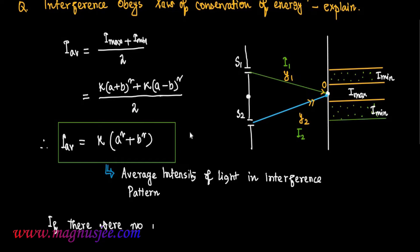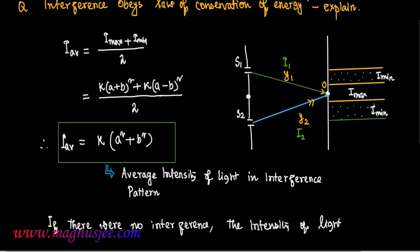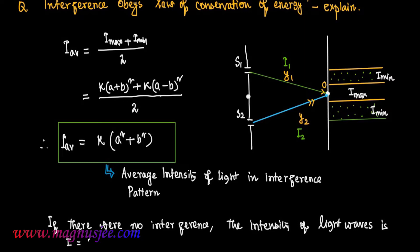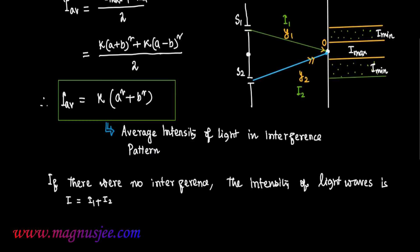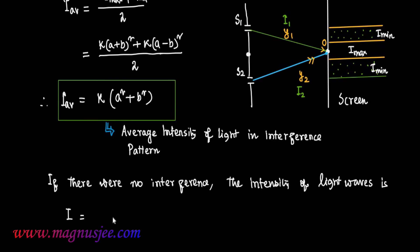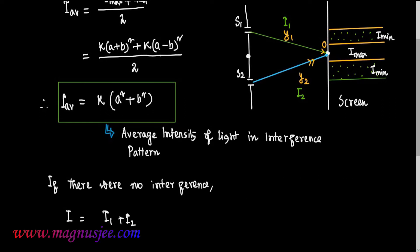If there were no interference of light — that means if interference does not occur — then the intensity of light waves will be I = I1 + I2. This is shown on the screen in the diagram. If there were no interference, the resultant intensity of light waves would be I = I1 + I2.